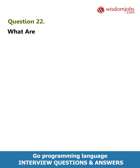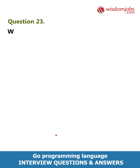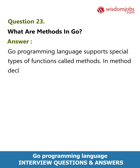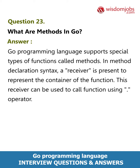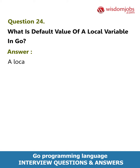Question 22: What are function closures? Answer: Function closures are anonymous functions and can be used in dynamic programming. Question 23: What are methods in Go? Answer: Go programming language supports special types of functions called methods. In a method declaration syntax, a receiver is present to represent the container of the function; this receiver can be used to call the function using the dot operator.